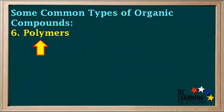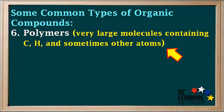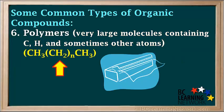A sixth type of organic compound is polymers. Polymers consist of very large molecules containing carbon, hydrogen, and sometimes other atoms. Polymers are the compounds that plastics are made from. One example is polyethylene, shown by the formula CH3(CH2)nCH3, where n is a very large number — it can be as high as 10,000 depending on the type of polyethylene.